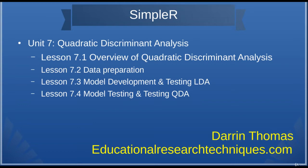Just like before, our unit is divided into four lessons, but with a slight twist. The first two lessons are similar to other chapters in the class, where I will provide an overview of quadratic discriminant analysis in this video. Then I will move into data preparation — just a few descriptive visualizations. And then in Lessons 3 and 4, what's slightly different is that we are going to use the same data but compare models.